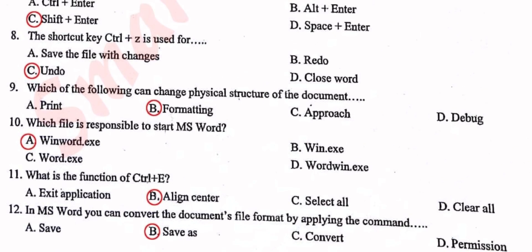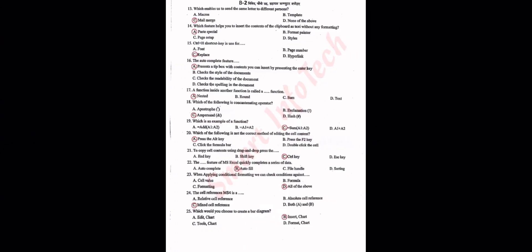In MS Office, you can convert the document file format by applying the command Save As. The function of Ctrl+E is Align Center.